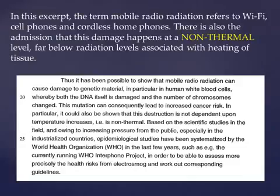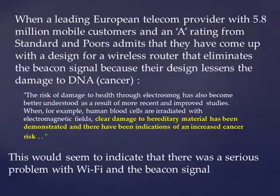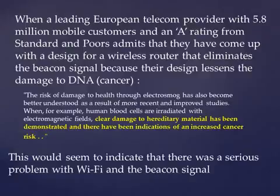In this excerpt, the term mobile radio radiation refers to Wi-Fi, cell phones, and cordless home phones. There is also the admission that this damage happens at a non-thermal level, far below radiation levels associated with heating of tissue. When a leading European telecom provider with 5.8 million mobile subscribers admits they've designed a wireless router that eliminates the beacon signal because their design lessens damage to DNA, this would seem to indicate a serious problem with Wi-Fi and the beacon signal.